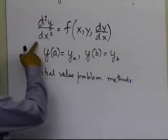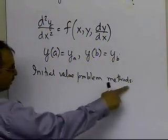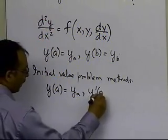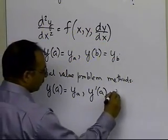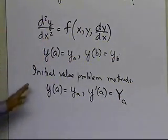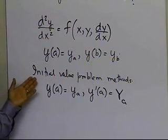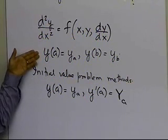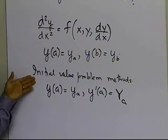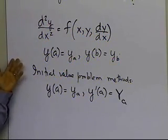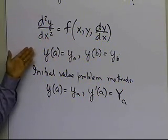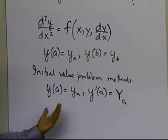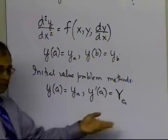So you have a boundary value problem, but it's going to use initial value problem methods to solve it. For a second-order differential equation of this form, solving with initial value methods would require the condition y(a), which is given, and also the initial slope y'(a). That's the only way you can solve the problem.